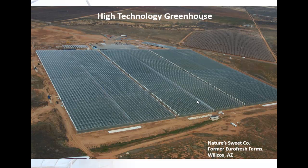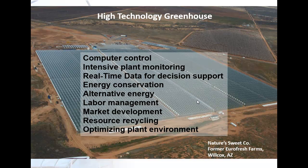An aerial view shows a 40-acre block of glass greenhouse having all the technologies: computer control, real-time plant monitoring providing decision support to help the grower make better decisions about modifying the environment, improving energy conservation while improving plant productivity, using alternate energy sources and cogeneration, monitoring and controlling labor to reduce costs, developing markets for the large volume of daily product, and ultimately optimizing the plant environment for productivity while reducing operational costs.